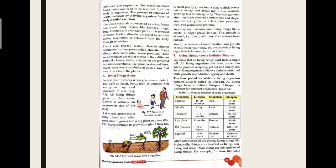When animals reach maturity and attain a certain size and shape, their growth stops. You may note that some non-living things like crystals of sugar also grow in size, but this growth is external — due to the addition of substance from outside. For example, if you put beans in water, some external substance is added to them, and after some time their size increases. So some non-living things also grow, but only when an external substance or force is applied.